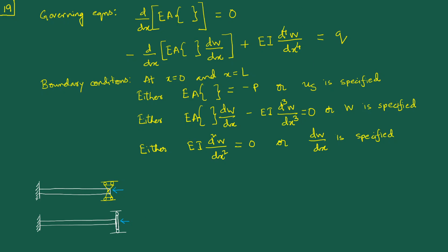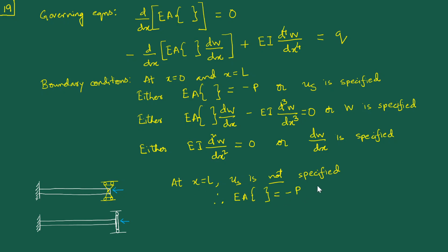Coming to this 'us specified' condition: at x equal to 0 and x equal to L, either us is specified or the complementary condition holds. As a first step toward simplification, we say that at x equal to L, us is not specified. If us is not specified, it must immediately follow from the either-or statement that EA times the curly bracket quantity must equal minus P at x equal to L.